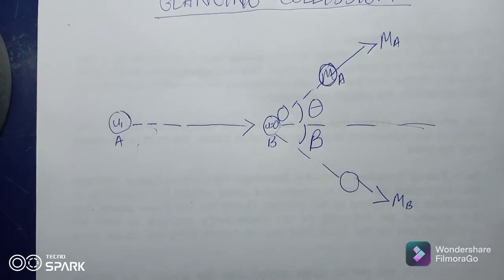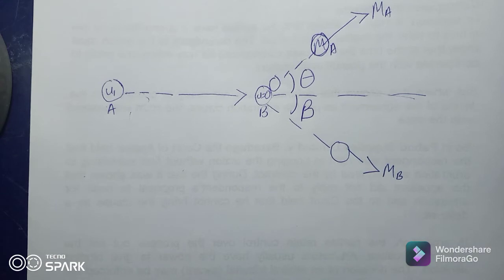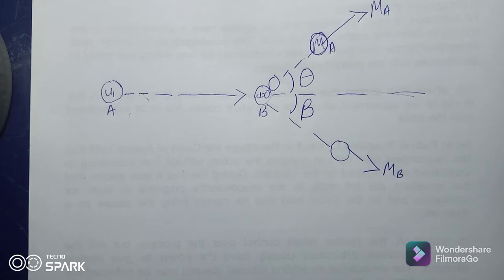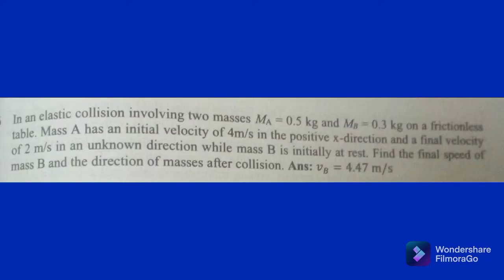The question goes: in an elastic collision involving two masses, mA = 0.5 kg and mB = 0.3 kg, on a frictionless table, mass A has an initial velocity of 4 meters per second in the positive x direction and a final velocity of 2 meters per second in an unknown direction, while mass B is initially at rest. Find the final speed of mass B and the direction of both masses after the collision.